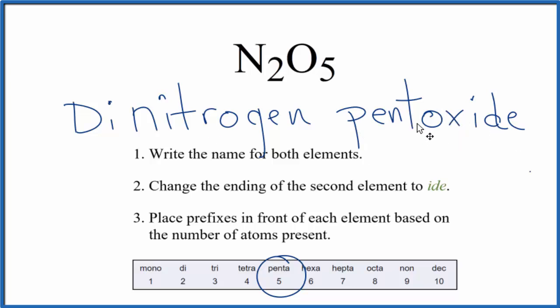If you're given the name and asked to write the formula, di means there's two nitrogens, and penta means five oxygens, N2O5.